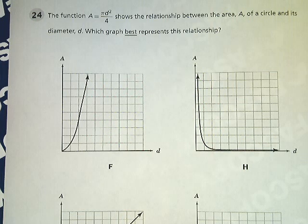Number 24: The function A equals π times the diameter squared over 4 shows the relationship between the area of a circle and its diameter. Which graph best represents the relationship?